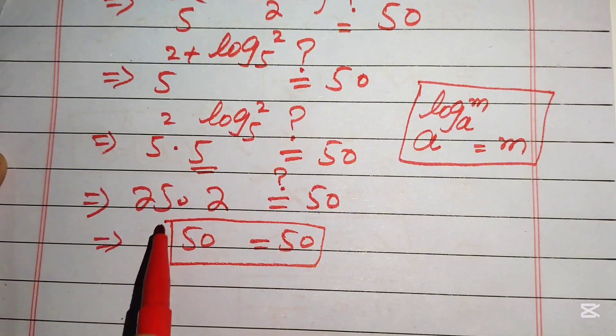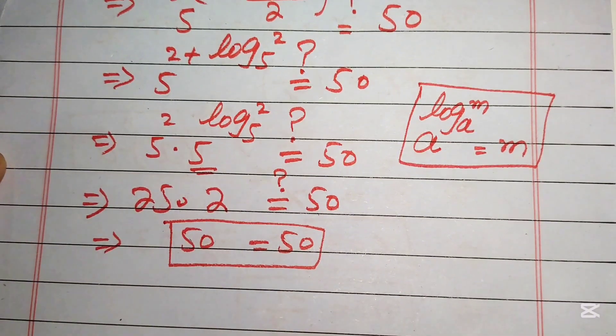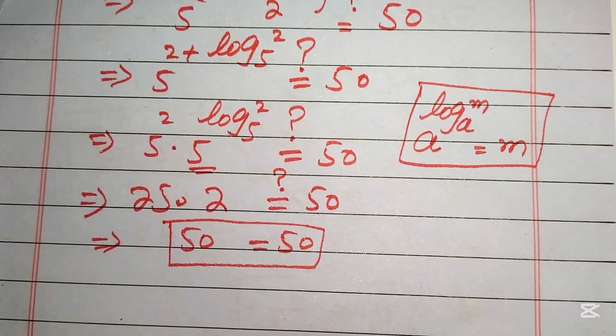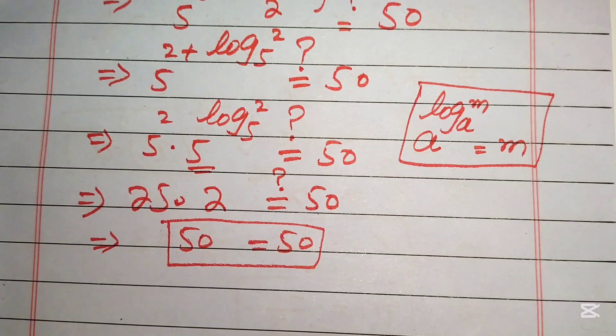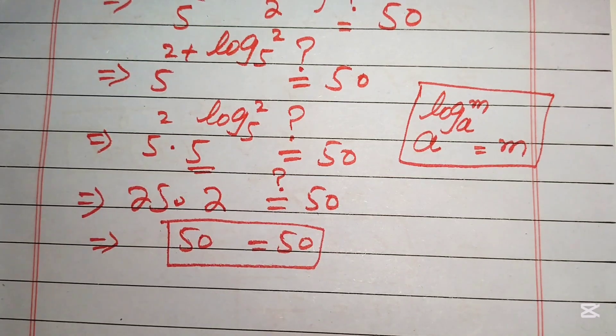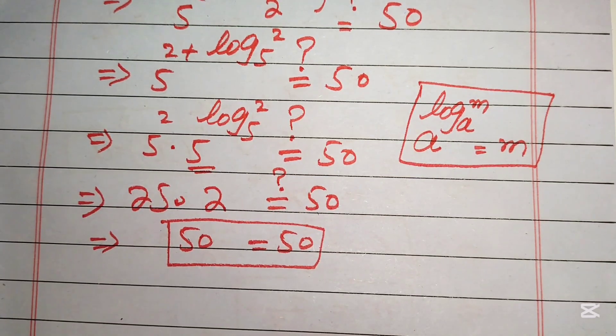We see that 25 times 2 equals 50, so 50 equals 50. The value of m satisfies the original equation, confirming our answer. Thank you for watching — please subscribe for more videos.